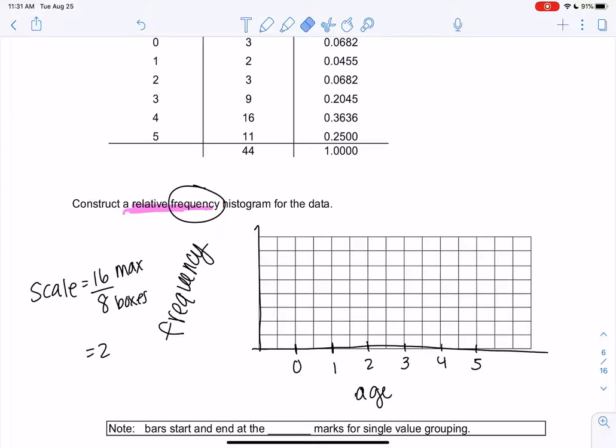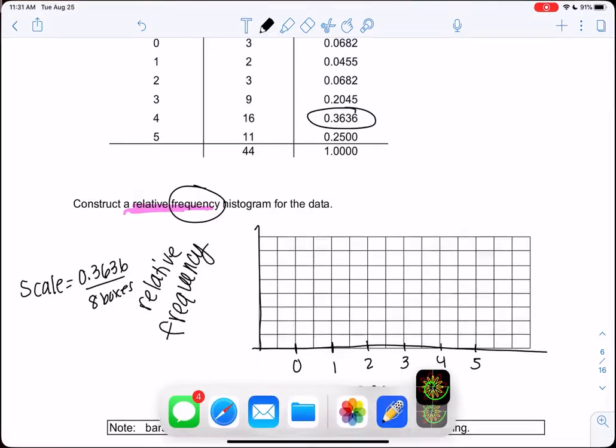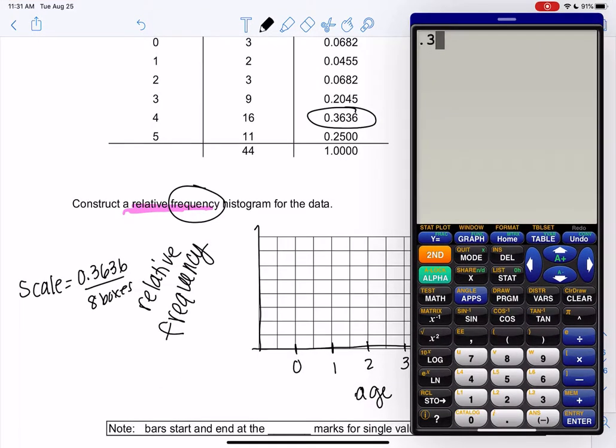So if I was doing frequency I would count by twos, but we're going to look at relative frequency. So my largest value is actually the 0.3636, and we found that there were eight boxes available. Again, eight to ten on binder paper sounds good. And I am not counting by this number right, 0.0454545, it's confusing. We want to round up to something nice, so hopefully we all see that maybe 0.05 would be easy because we're counting by fives just in decimal form. So we'll go by 0.05.